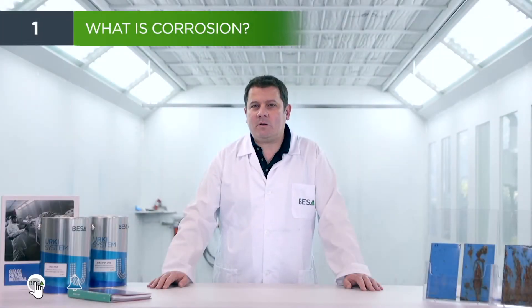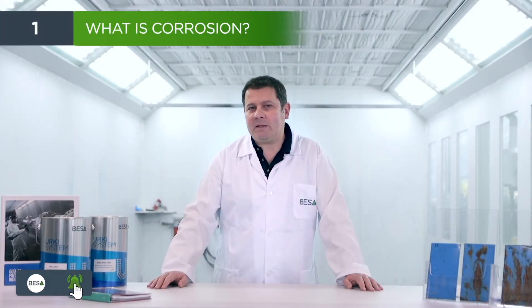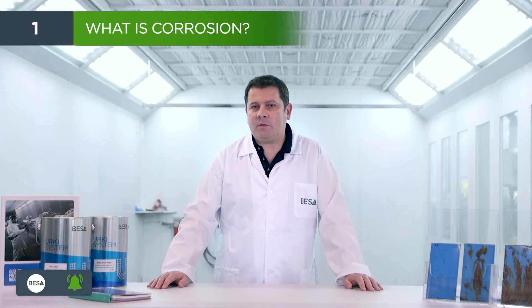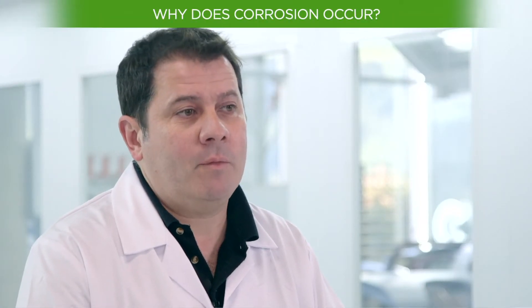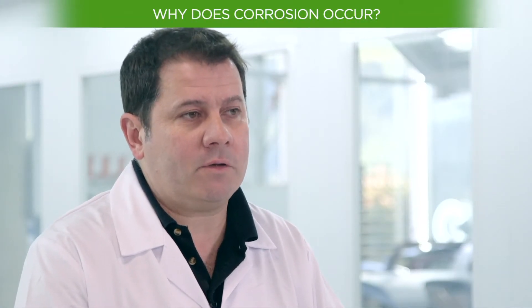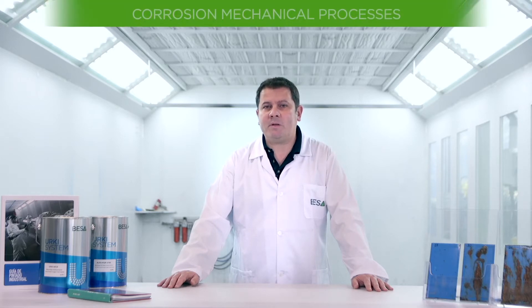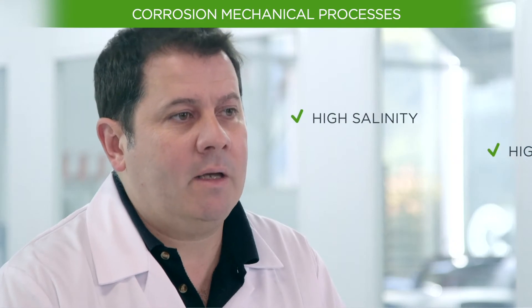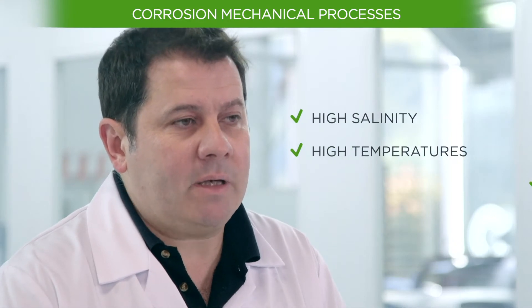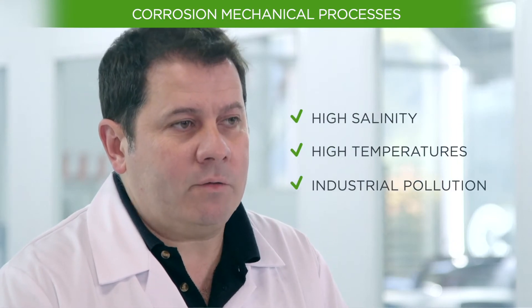Corrosion is the natural deterioration of materials due to their interaction with the environment. Corrosion occurs mainly in metals due to their reaction with oxygen. In general, the processes can be chemical or electrochemical, but they can also be physical or mechanical, such as high salinity, high temperatures, or industrial pollution.